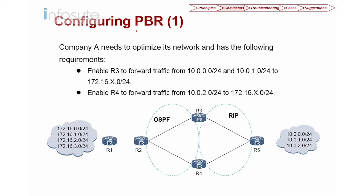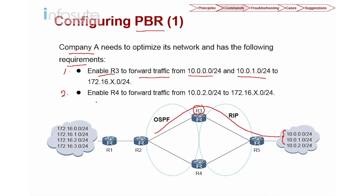Now let's look into policy-based routing. Company A needs to optimize the network with two requirements: first, enable R3 to forward traffic from 10.0.0.0/24 and 10.0.1.0/24; second, enable R4 to forward 10.0.2.0 to 172.16.x.0. To accomplish this we need to use PBR.